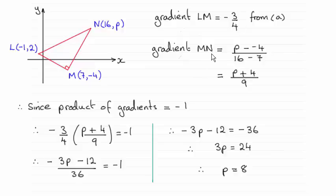I've now worked out the gradient of MN as you can see is the difference in the y values p minus minus 4 divided by the difference in the x values 16 minus 7. And that cleans up to p plus 4 over 9.